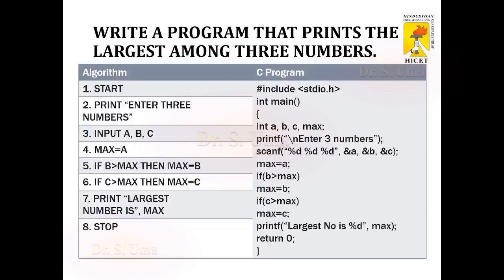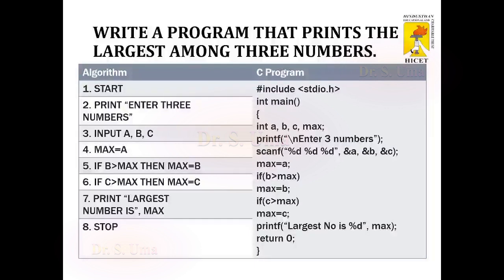First, we are setting the variable max equal to A. If B is greater than max, then max is set equal to B. If C is greater than max, then max is set equal to C. Finally, we have the largest value in max and the largest value will be printed. We make use of the printf statement in order to print any information onto the display and we make use of the scanf statement in order to get the input values from the keyboard.